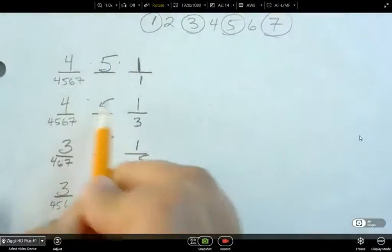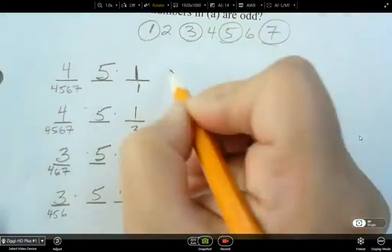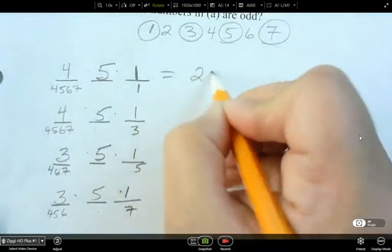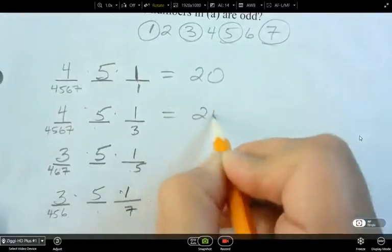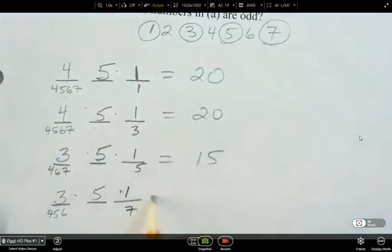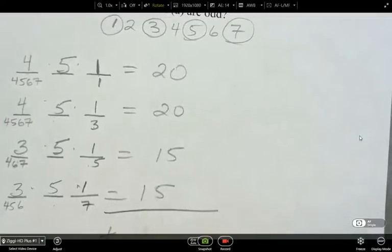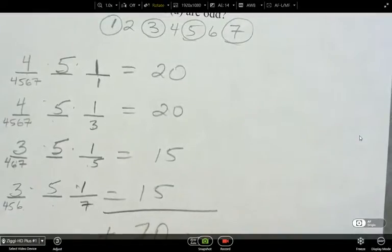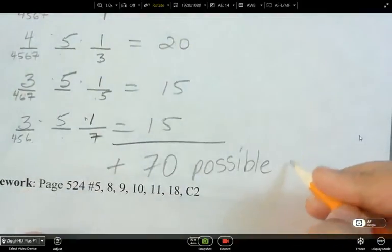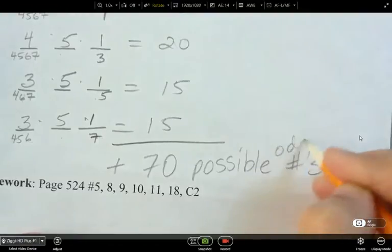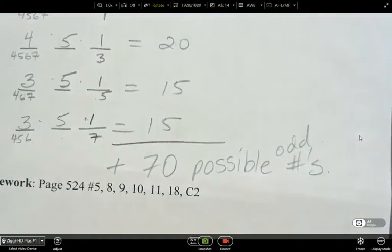So now I can figure out each of these and then add the total. So how many here? 20, 20, 15, 15. My total, if I add these all together, is 70 possibilities. 70 possible odd numbers.